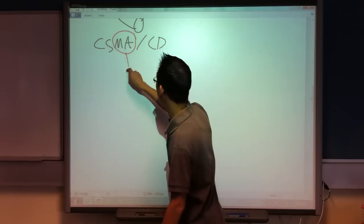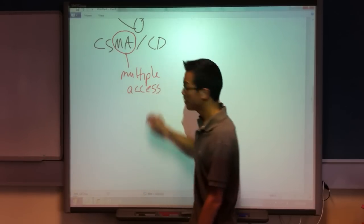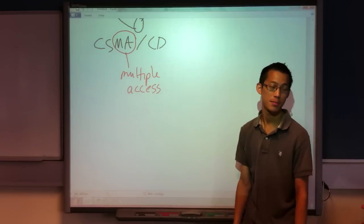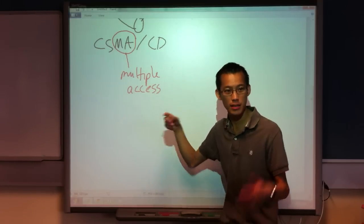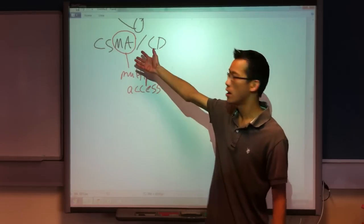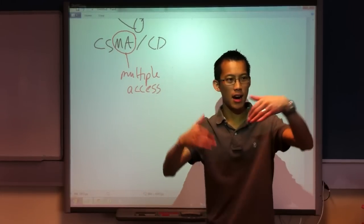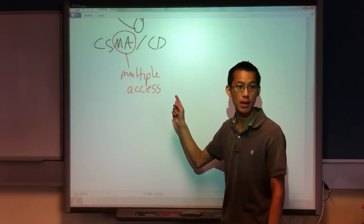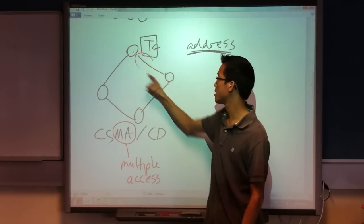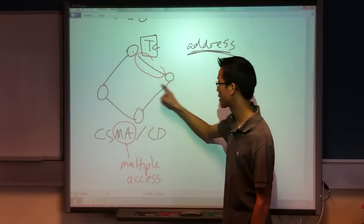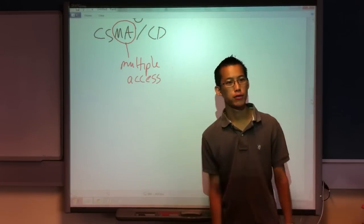MA. The MA stands for Multiple Access. This is sort of another way of saying this protocol is designed for buses. It's designed for networks where multiple people are accessing the same kind of space. So that's why this protocol doesn't make sense on a ring. Because you don't have media connections that multiple people can access.